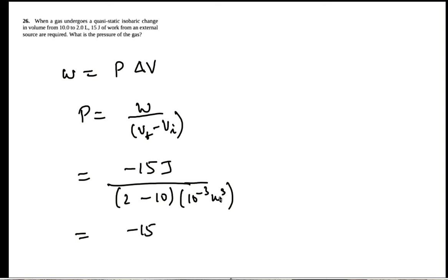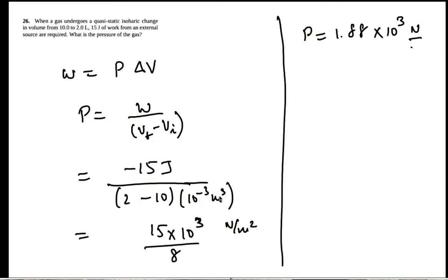So this is 15 into 10 to the 3 divided by 8. And so the pressure is 1.88 into 10 to the 3 Newtons per meter squared.